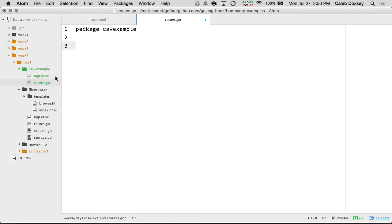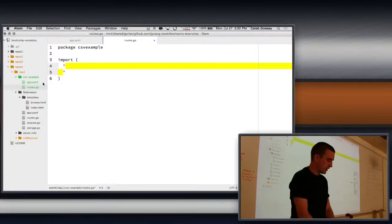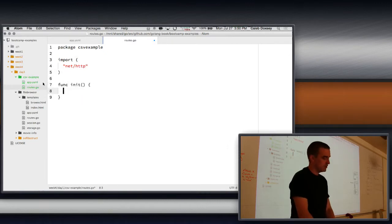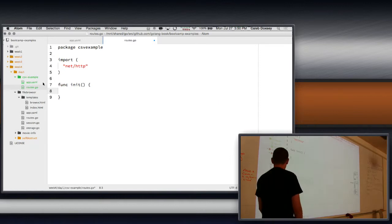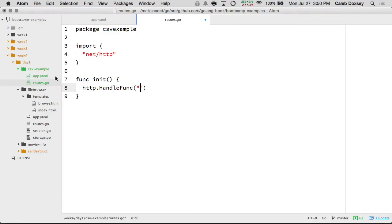And then we'll create a new file. We'll call it routes.go. Package. Call it CSV example, all one word, all together. And what should I have in my route scope? Import. Probably net HTTP. Yep.